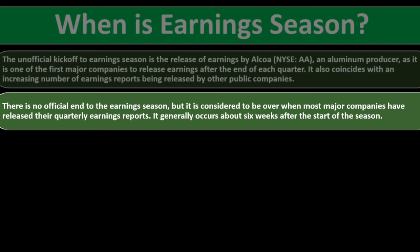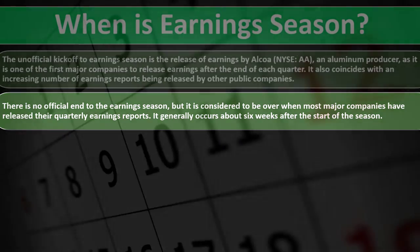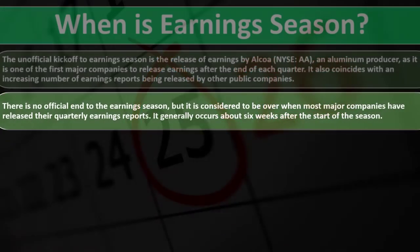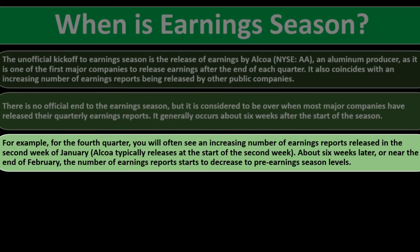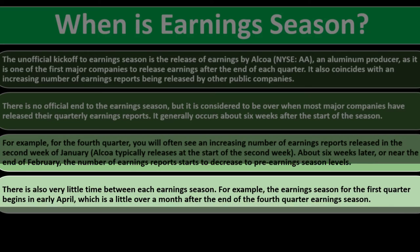There is no official end to earnings season, but it is considered over when most major companies have released their quarterly earnings reports. It generally occurs about six weeks after the start of the season. For the fourth quarter, you'll often see an increase in reports in the second week of January. Alcoa typically releases at the start of the second week, and about six weeks later — near the end of February — the number of reports starts to decrease to pre-earnings season levels.